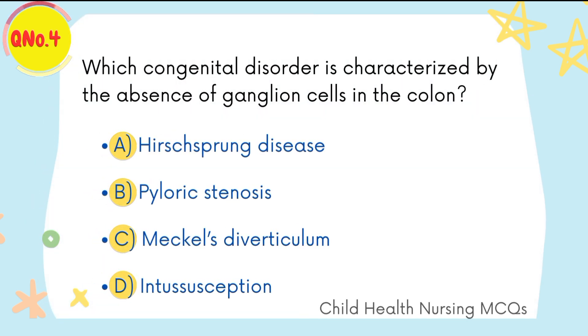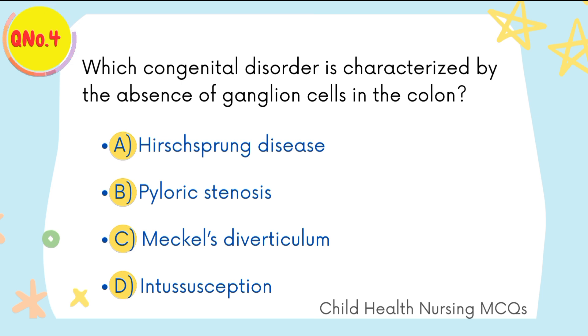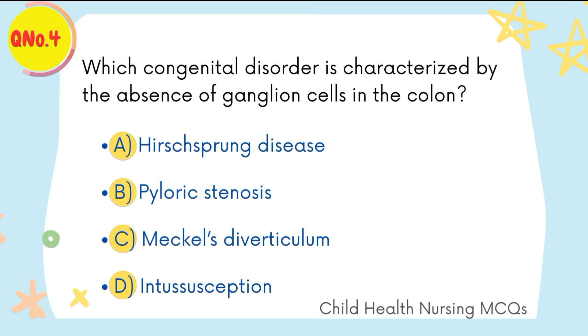Question number four: which congenital disorder is characterized by the absence of ganglion cells in the colon? A is the right option: Hirschsprung's disease.